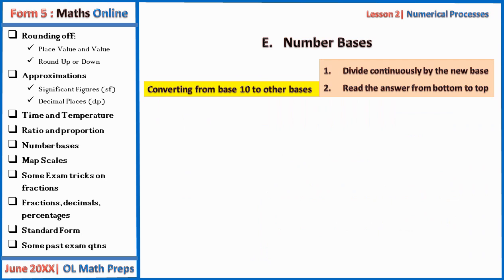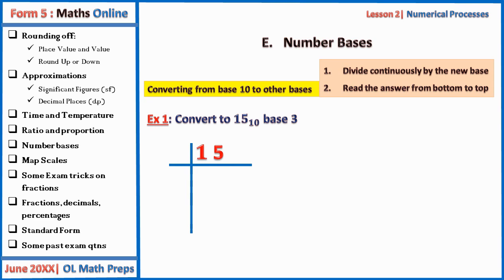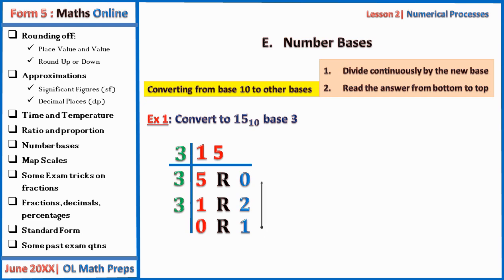To convert from base 10 to any other base, divide continuously by the new base, then read the remainders from bottom to top. Example: convert 15 base 10 to base 3. Divide continuously: 15 ÷ 3 = 5 remainder 0; 5 ÷ 3 = 1 remainder 2; 1 ÷ 3 = 0 remainder 1. Reading remainders from bottom to top gives 120 base 3.